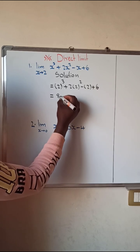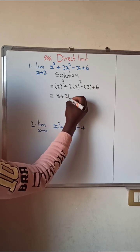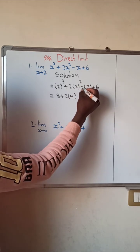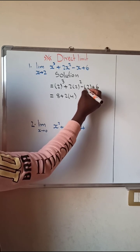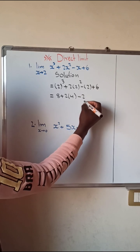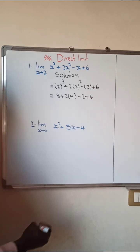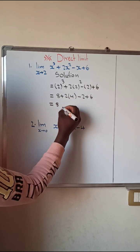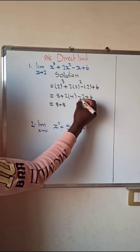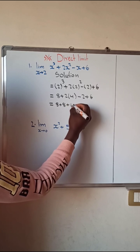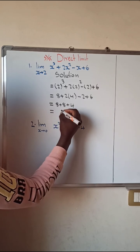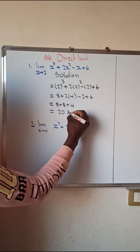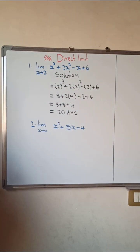So we have 8, plus 2 times (2²): 2 in 2 places gives us 4, so 2 times 4 is plus 8. Then negative 1 times 2 gives us minus 2, and plus 6. So we have 8 + 8 = 16, and 16 minus 2 plus 6 gives us positive 4, so 16 + 4 = 20. This is the answer to limit Example 1.